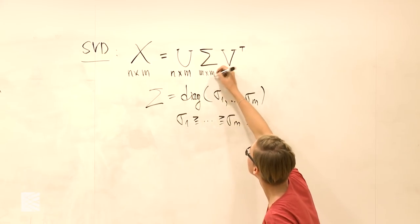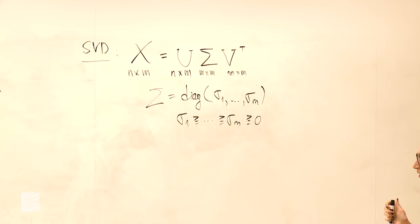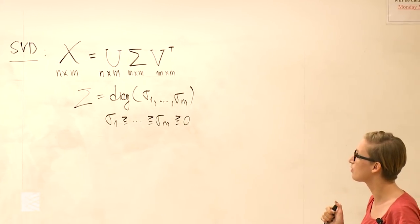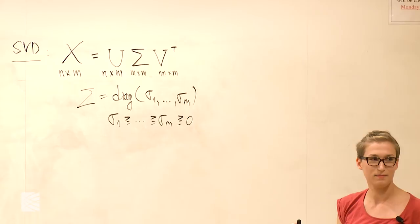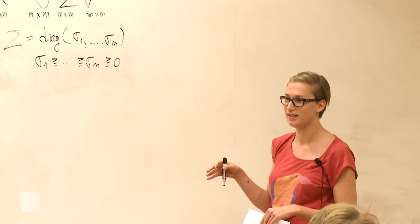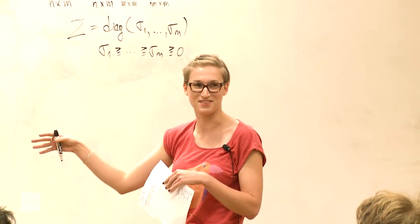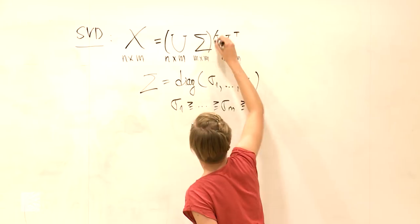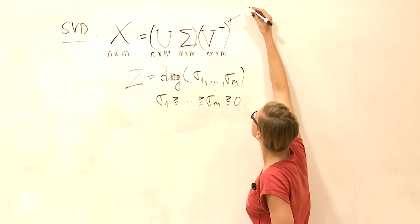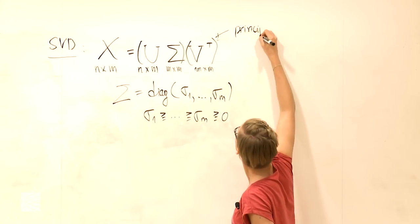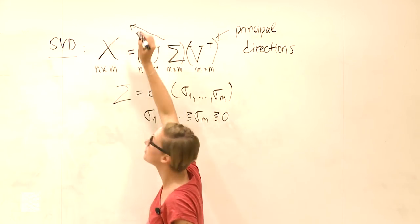V is M by M — here it appears transposed — and the columns of V are also an orthonormal basis in R^M, called the right singular vectors. They have another name: if the data X has columns that are mean-centered, then V contains the principal directions, and U times Sigma are the principal components.